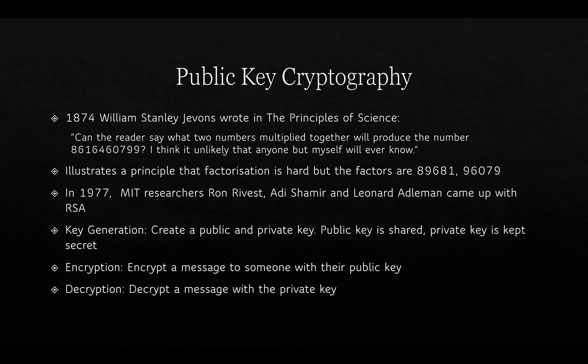In this final video we're going to talk about public key cryptography and what problems it was aimed at solving. In 1874, William Stanley Jevons wrote in 'The Principles of Science': 'Can the reader say what two numbers multiplied together will produce the number 8,616,460,799?' He was trying to point out that it is very easy to multiply two numbers together, but very difficult to do the reverse. The factors of that number were 89,681 and 96,079.